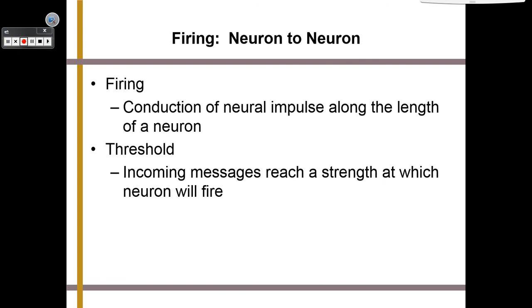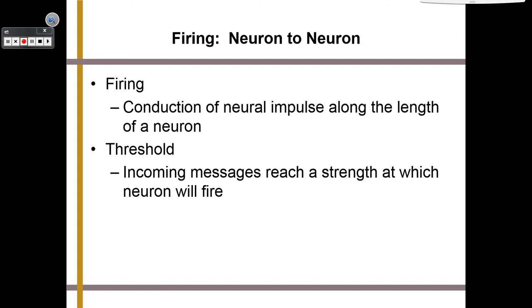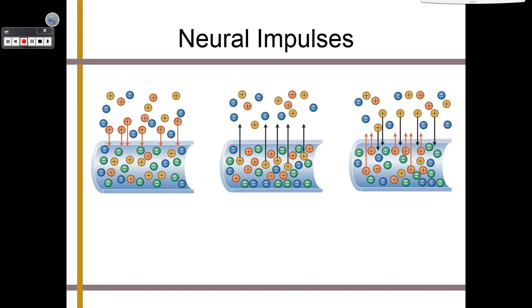As more positive ions enter the neuron and eventually want to leave, we build up more and more charge until action potential has been reached and everything fires at once.